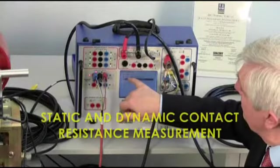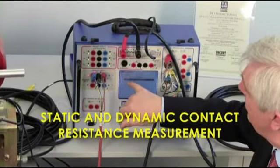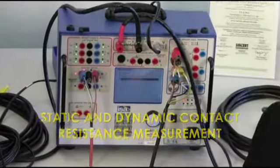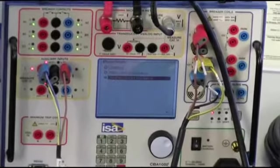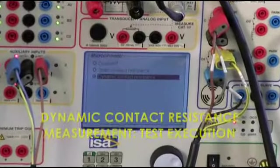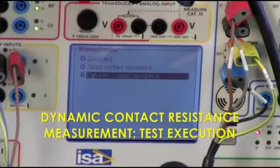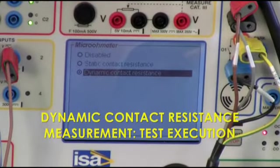You see, you have static contact resistance, but you also have dynamic contact resistance. What is it? It is the possibility that we have to measure the resistance while the contact is opening, and this can be very, very important.